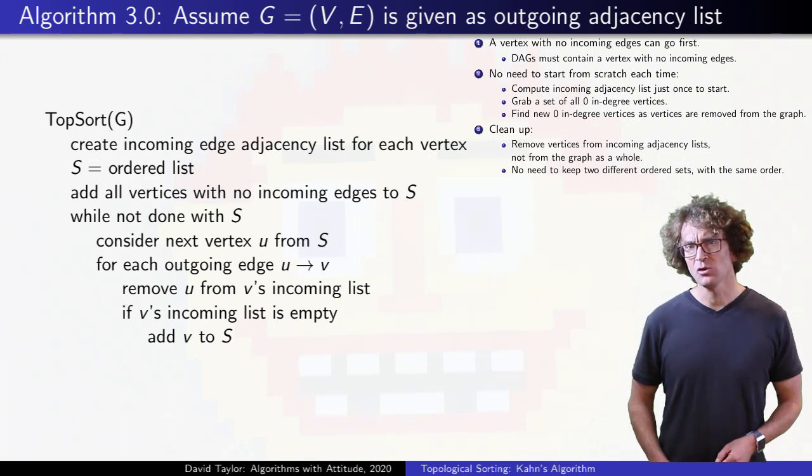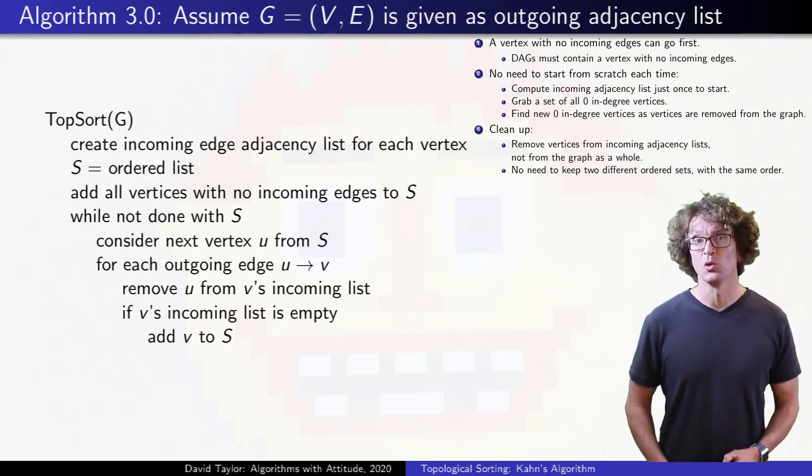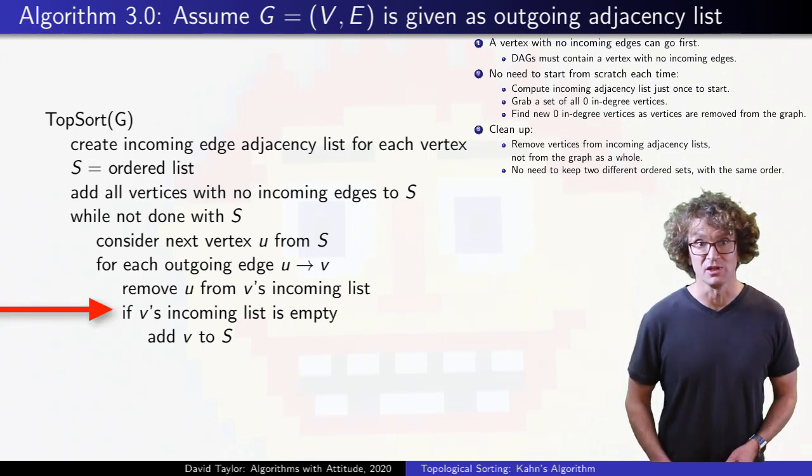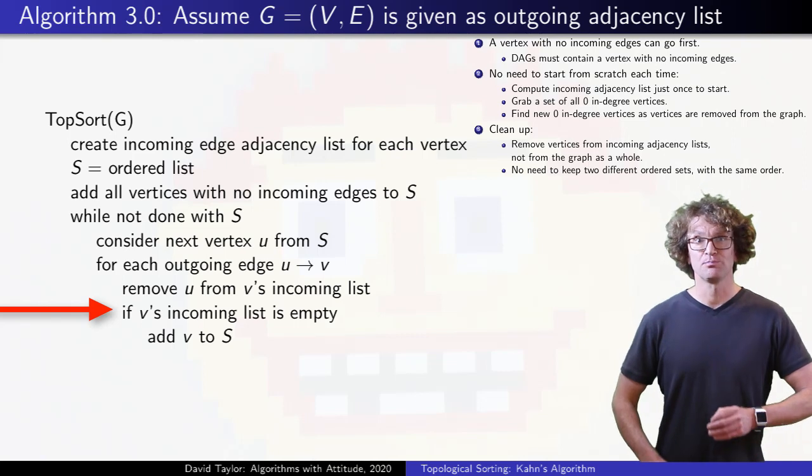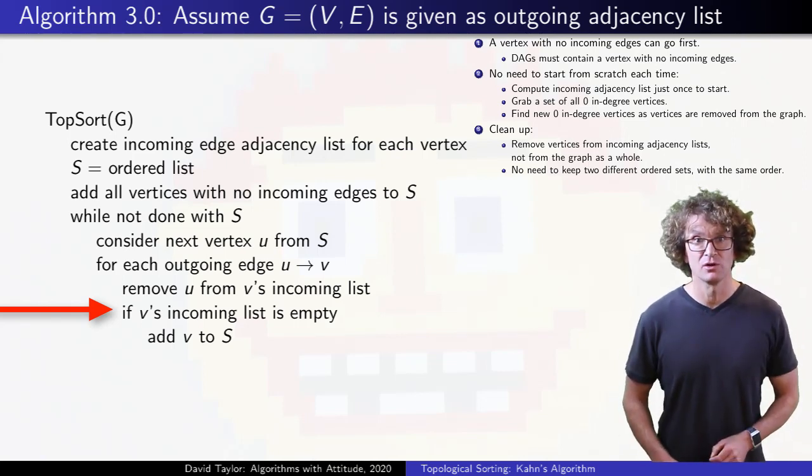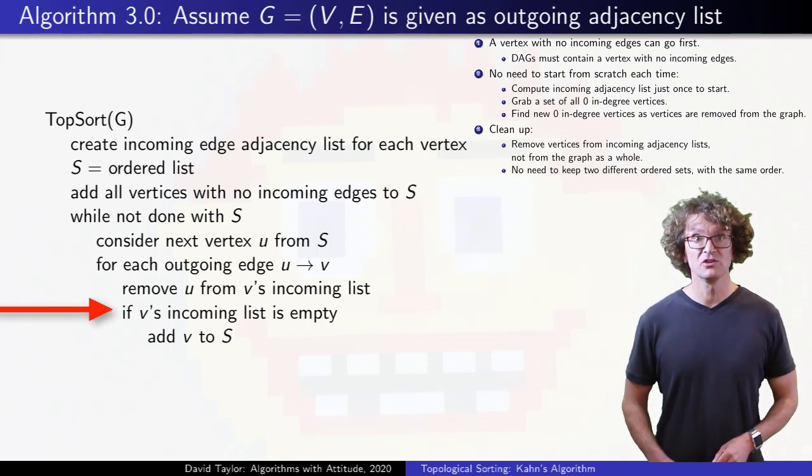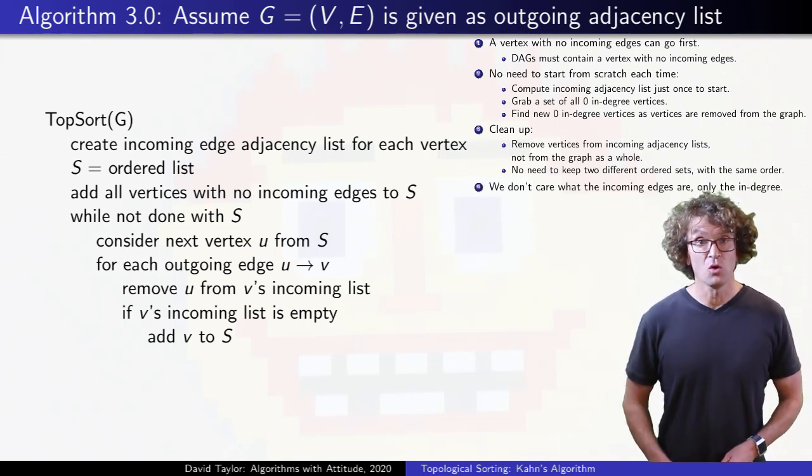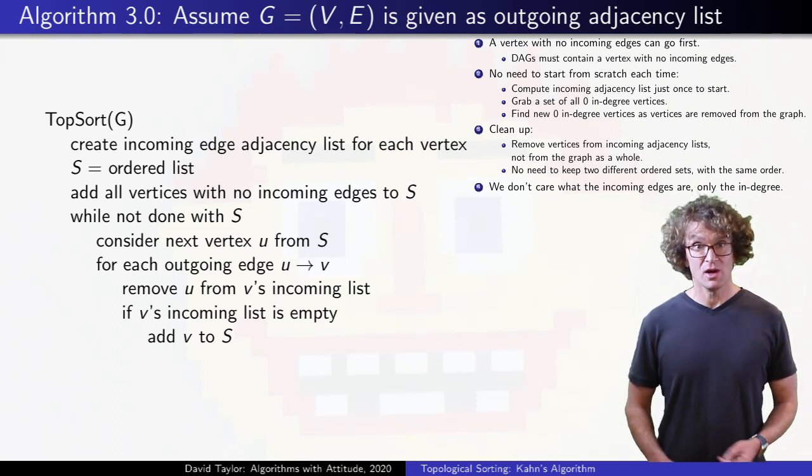Well, how do we really use those incoming lists? The only thing we use each one for is to see if it's empty. We are just keeping these perfect lists, deleting exactly the right edge from each, in order to see if it's empty. We never use the list contents, only its size. So just track the size.